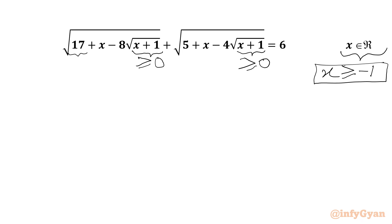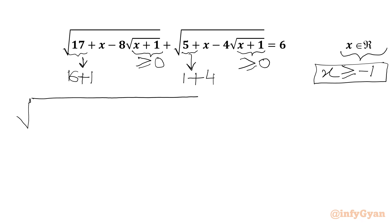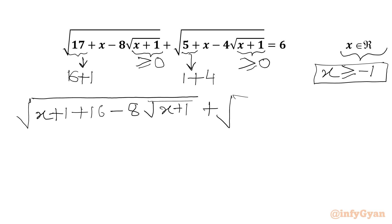Now we have 17, which we will split as 16 plus 1. And in this radicand we have 5, which we are going to write as 1 plus 4. So let me write our equation: square root of 17 plus x — I can write x plus 1 plus 16 — then we have minus 8 times square root of x plus 1, plus square root of 5 plus x — we will write x plus 1 plus 4 — then minus 4 times square root of x plus 1, equal to 6.